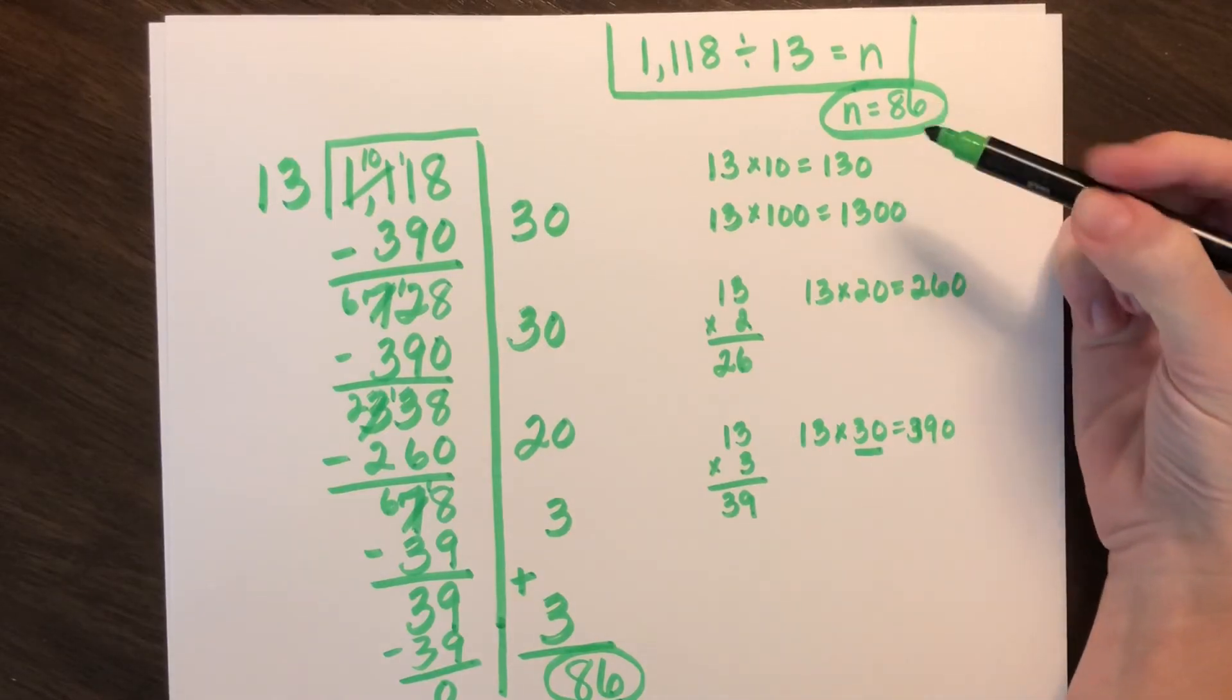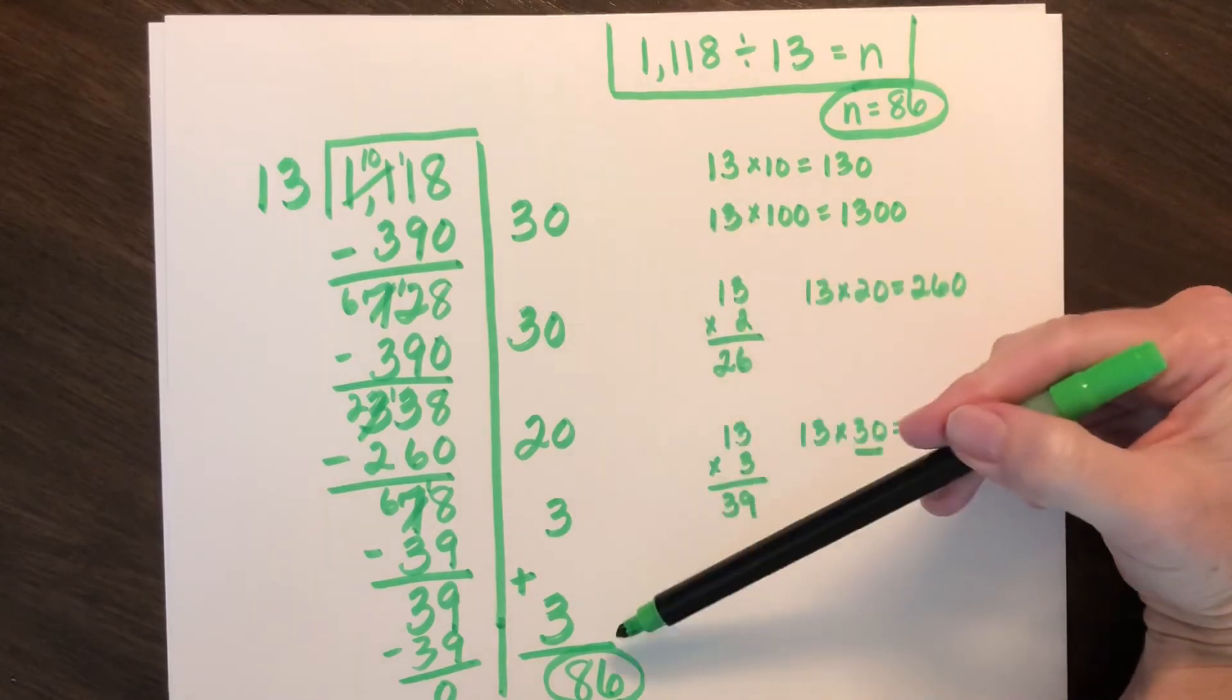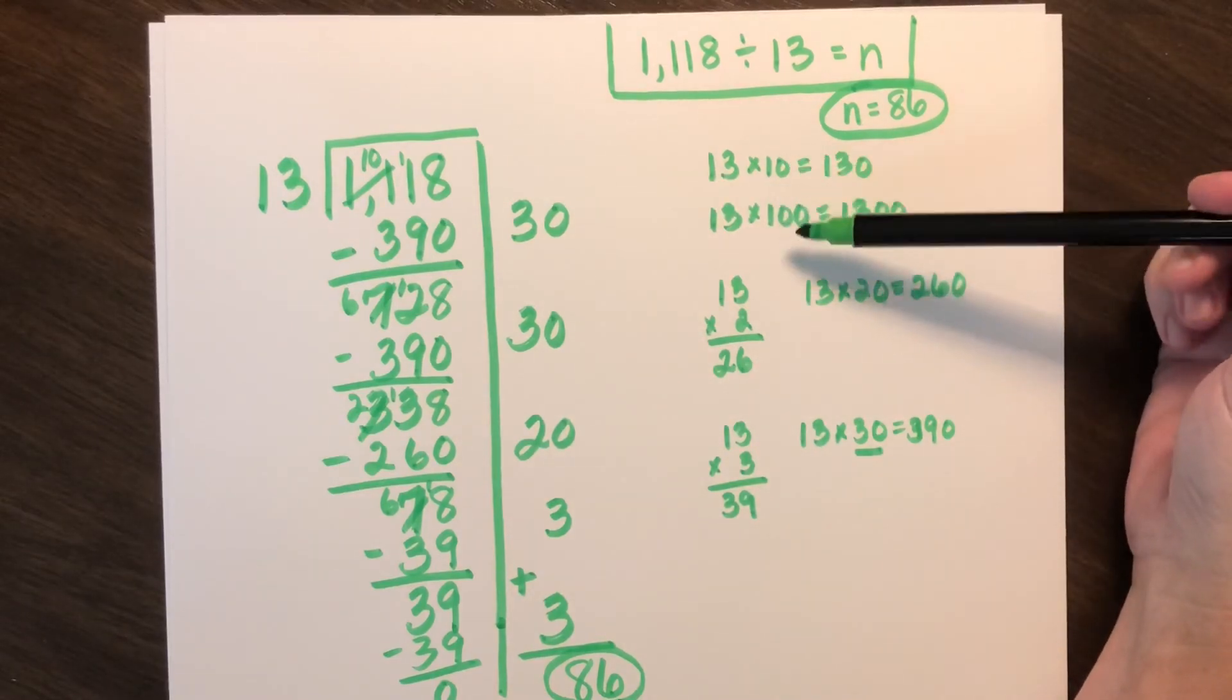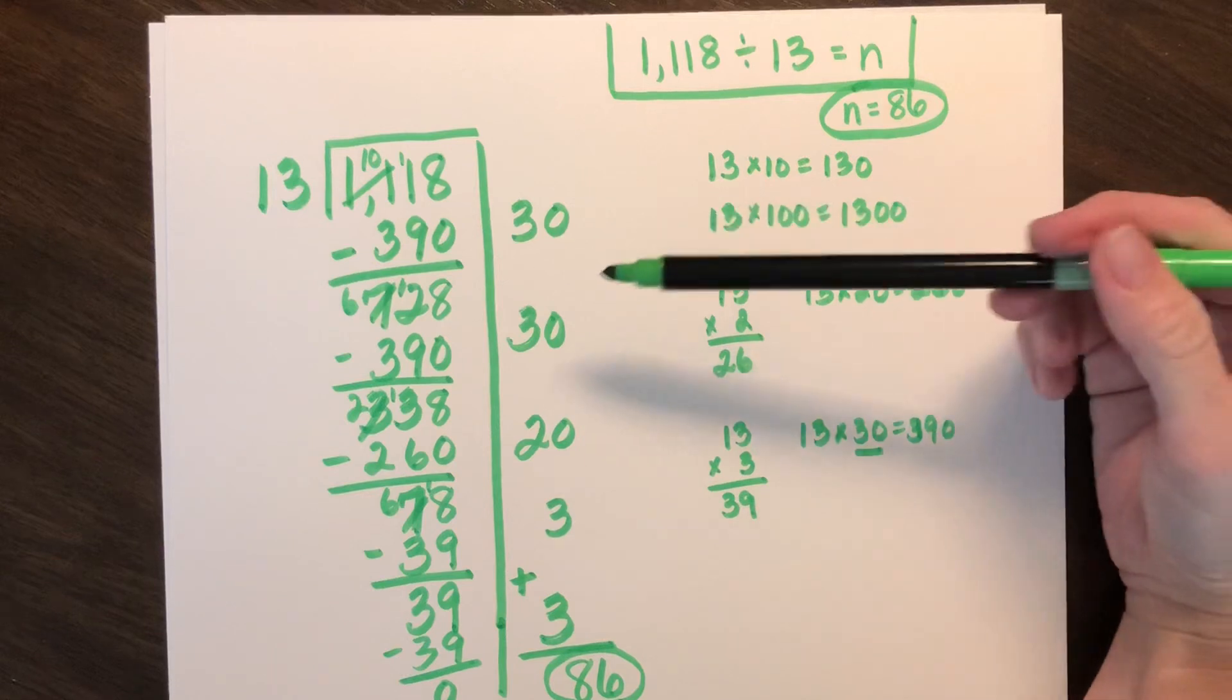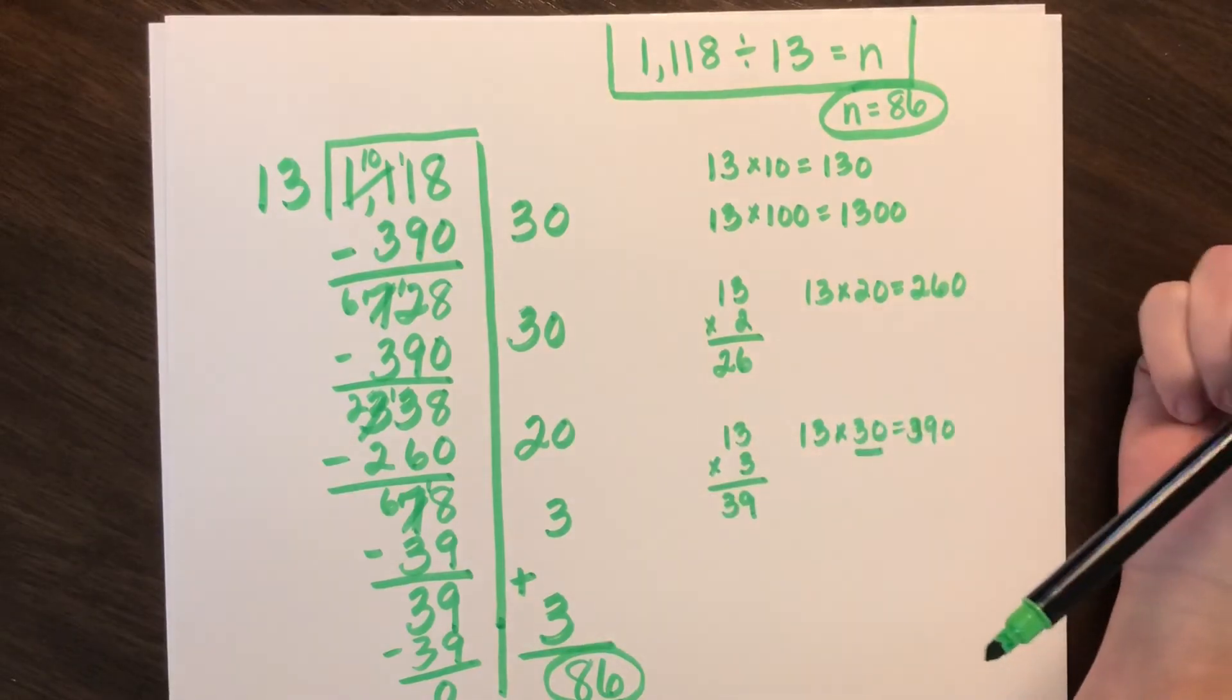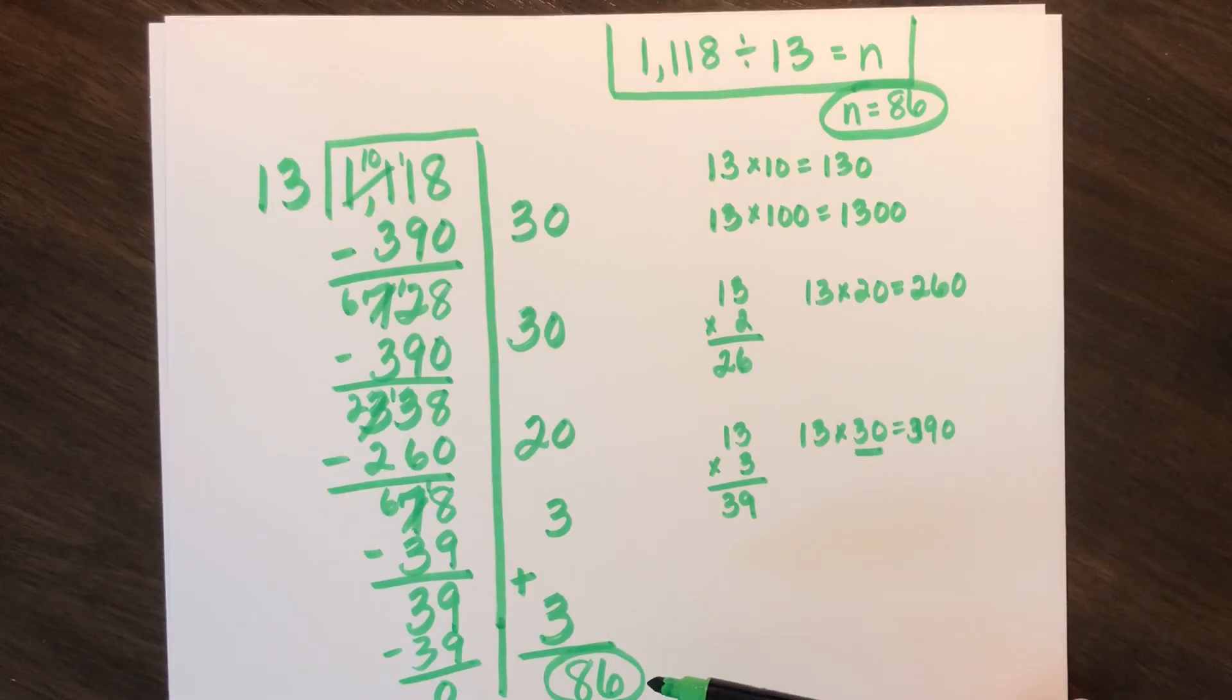So today, as you work on your division problems, just as you've been doing, continue to work in this partial quotients process. Be thinking of multiples that are going to be easy to use for you. And remember that your partial quotients might look different from someone else's, but your final quotient should look the same.